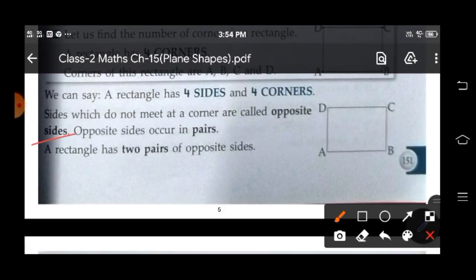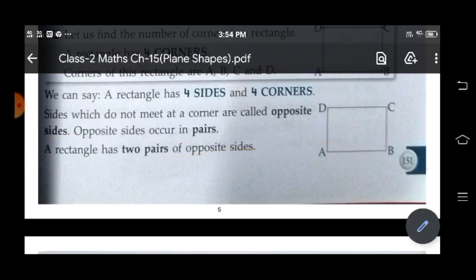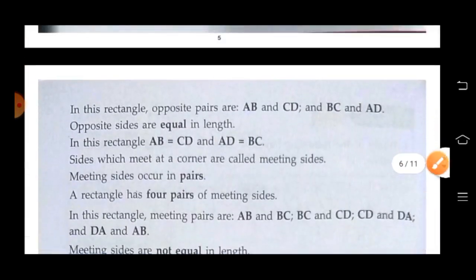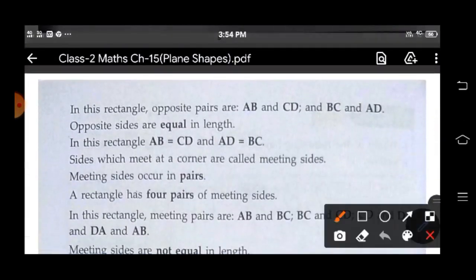Opposite sides occur in pairs. A rectangle has two pairs of opposite sides. In the rectangle, opposite pairs are AB and CD, and BC and DA. Opposite sides are equal in length — AB equals CD and AD equals BC.